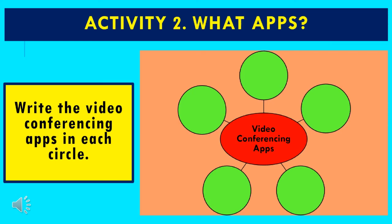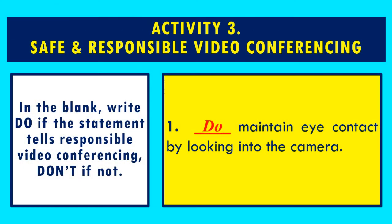Activity 2 is titled What Apps? In the diagram, you are going to write the video conferencing apps in each circle. Activity 3 is Safe and Responsible Video Conferencing. In the blank, write do if the statement tells responsible video conferencing, and write don't if otherwise.